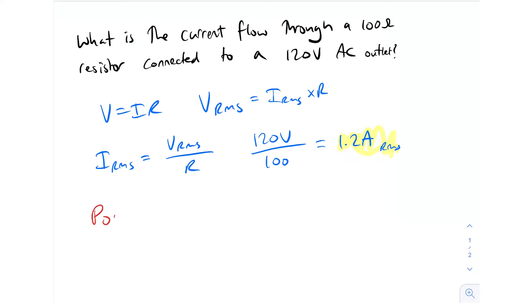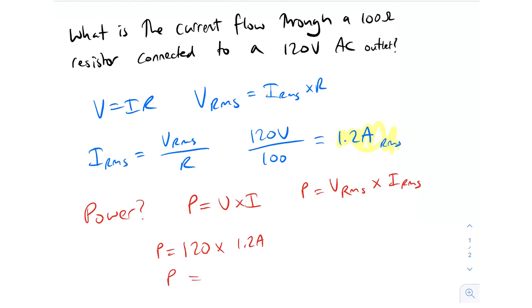Okay, so why don't you try find the power? What's the power dissipated through that resistor? Okay, so P = V times I, right? So P = voltage RMS times I_RMS. So we already have the voltage in the question. It's 120 volts. So P equals 120, and we just worked out that the current was 1.2 amps. So that gives us P = 144 watts. So the power dissipation through that 120 ohm resistor is 144 watts.